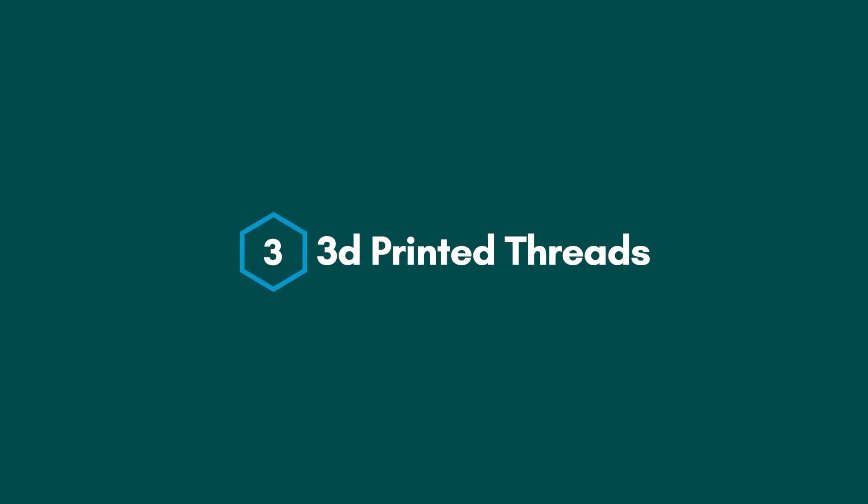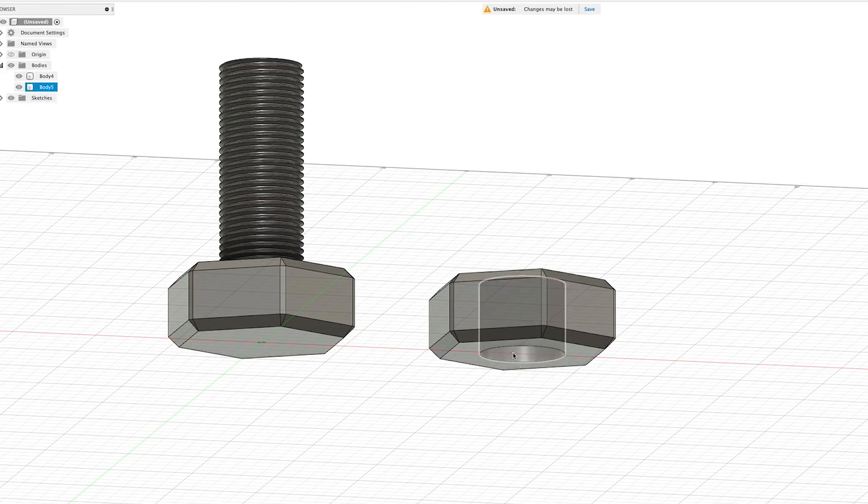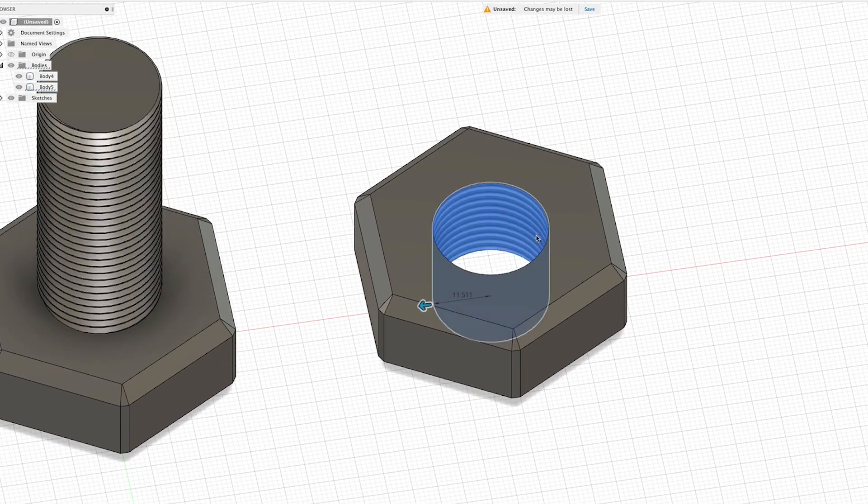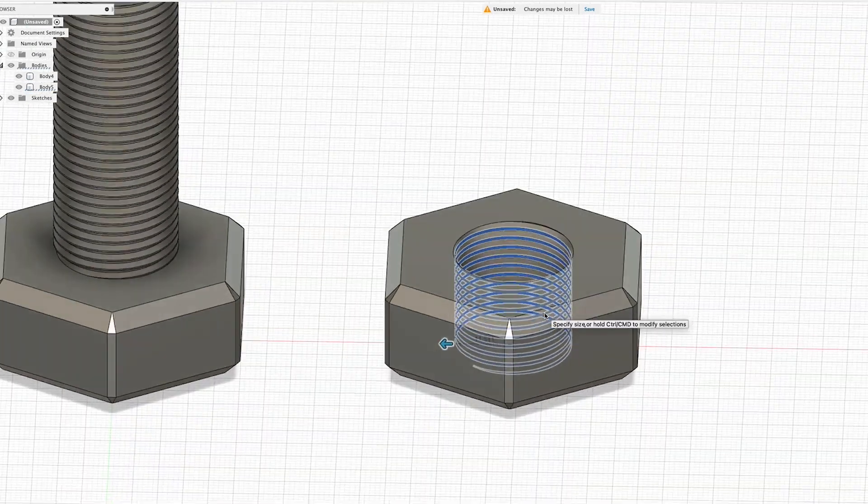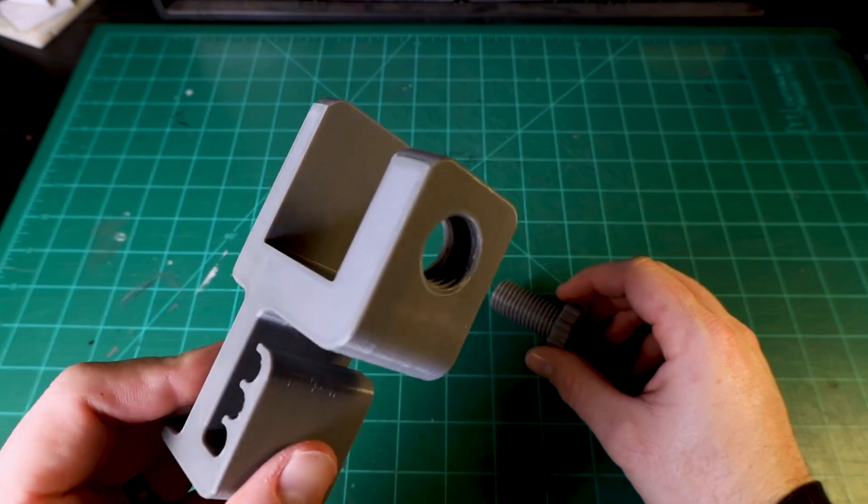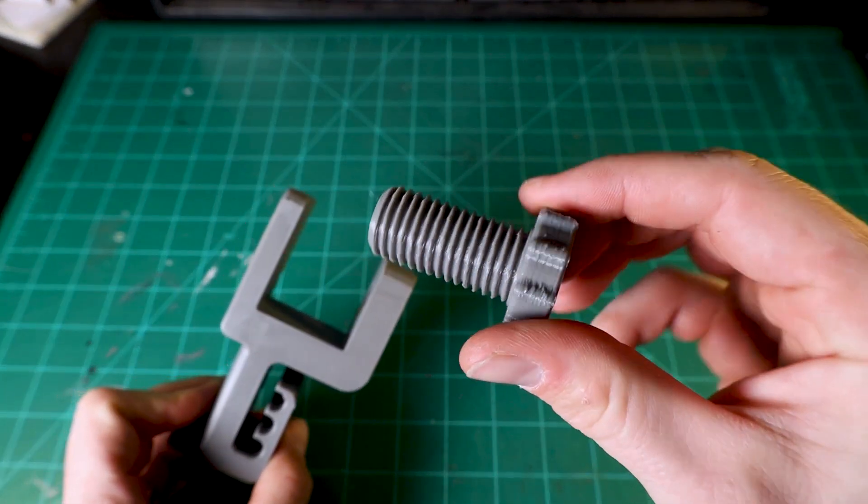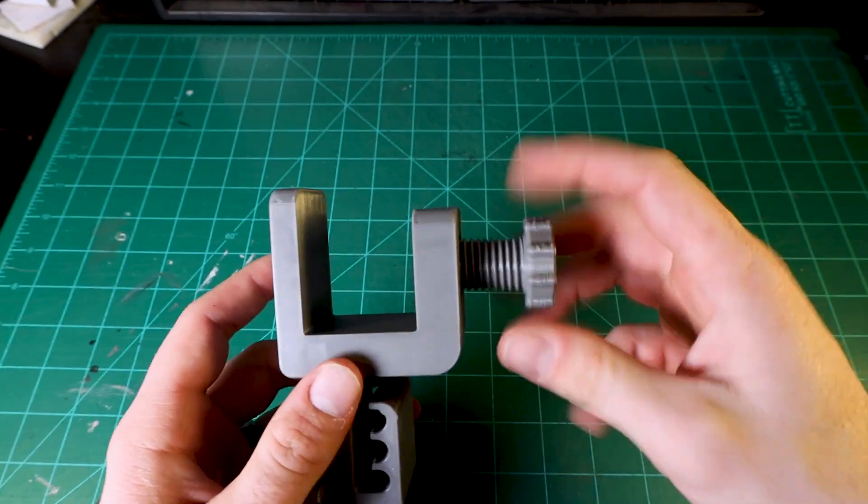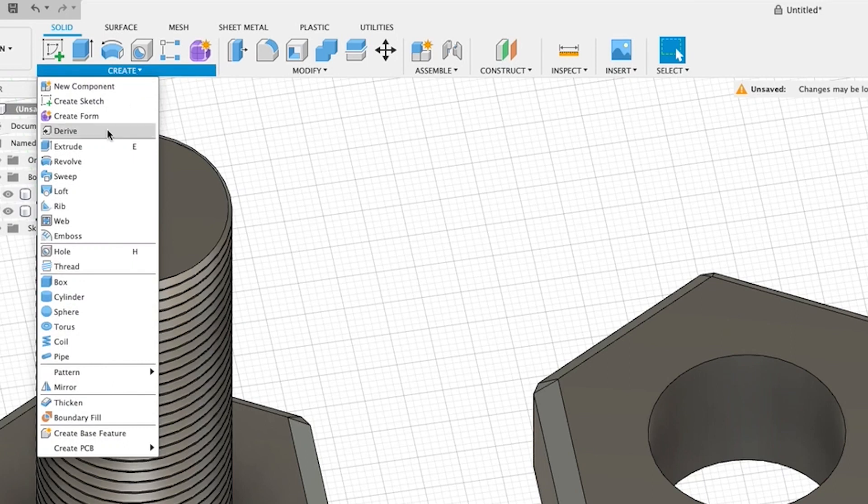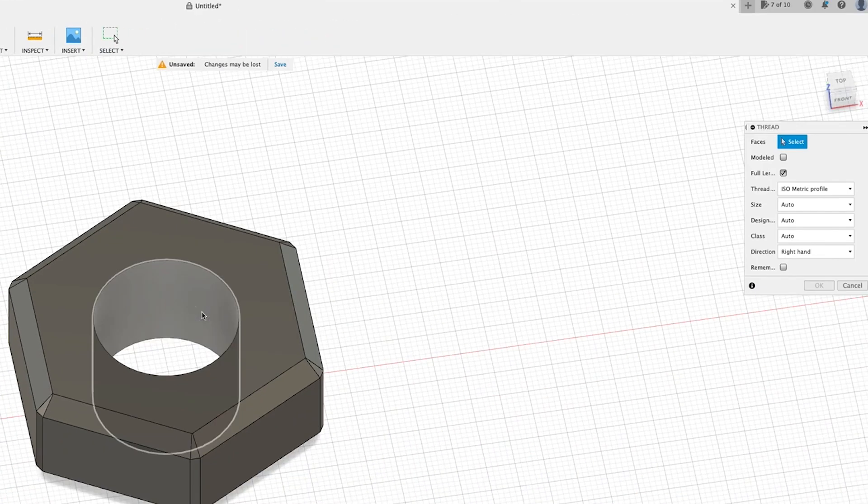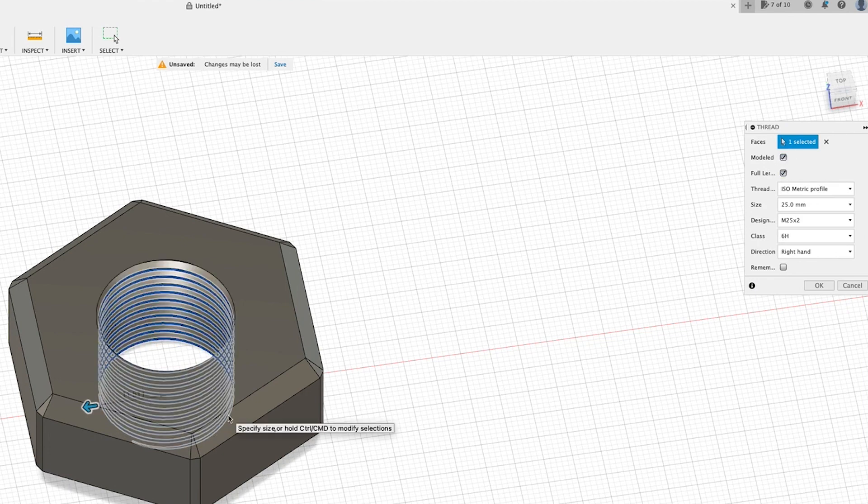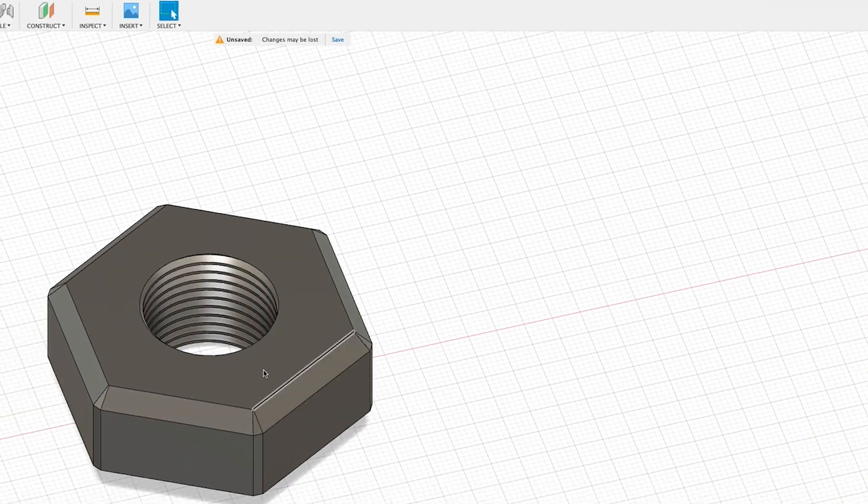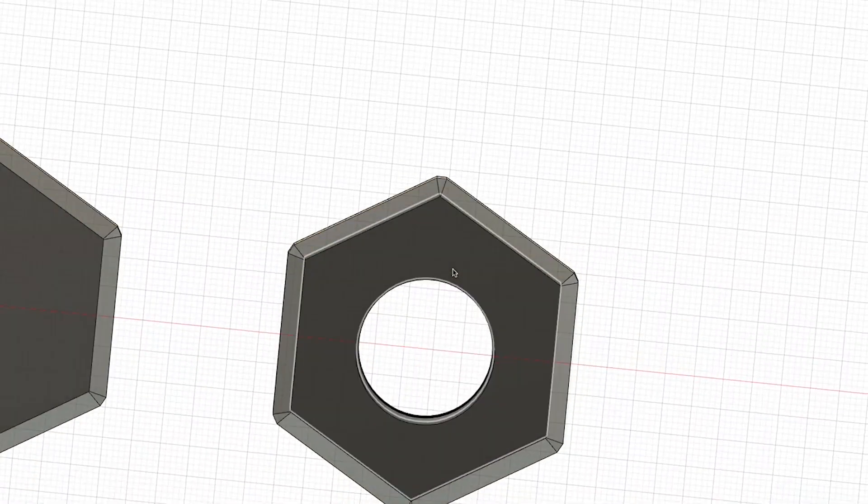Method number three: designing threads into your parts. This method is pretty self-explanatory, but basically it involves designing threads right into your parts, and that could mean you are adding internal threads to a hole so that a bolt fits into it easily, or you're adding external threads to your part, or both. This method does require more effort during the designing phase, but Fusion 360 and other modeling software often have built-in tools to assist in the creation of threads and they will often handle tolerances for you as well, so you can generate perfectly functional threads in a matter of seconds.